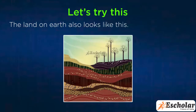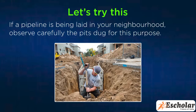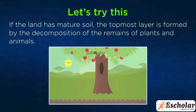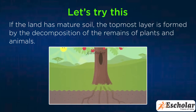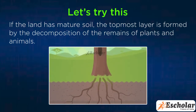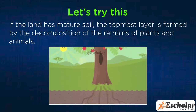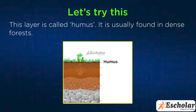The land on earth also looks like this. If a pipeline is being laid in your neighborhood, observe carefully the pits dug for this purpose. You will see some layers under the land surface as shown in the accompanying figure. If the land has mature soil, the topmost layer is formed by the decomposition of the remains of plants and animals. This layer is called humus.